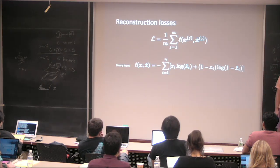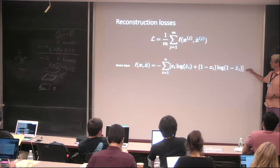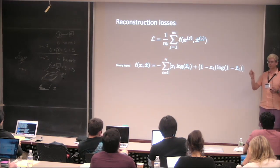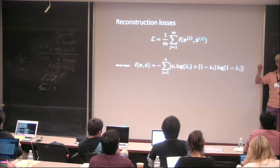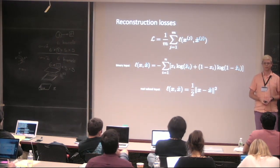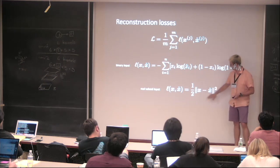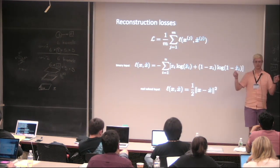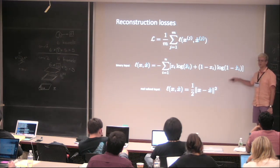If you have real-valued data — like pixel color values of images or audio signals — you'd use the squared L2 norm of the distance between the input and its reconstruction. For binary data like black-and-white images or event data, use binary cross-entropy. For real-valued data, use the squared distance — that's a regression. So the choice of loss depends on the type of data.